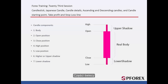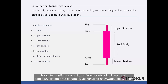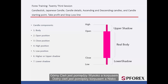Looking at the different parts of a Candlestick: a candle has a main body, also known as the real body. Open is the price the candle forms. Close is the price the candle is closed. High means the highest amount the candle reached, and low is the lowest price the candle touched. The area between the body and the high and low prices is called the shadow. The upper shadow is between the high and the main body, while the lower shadow is between the main body and the low.